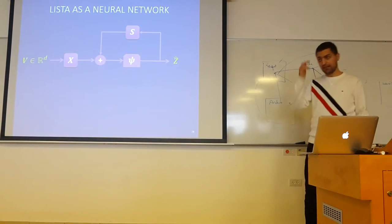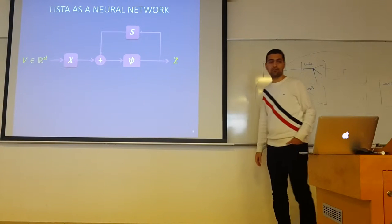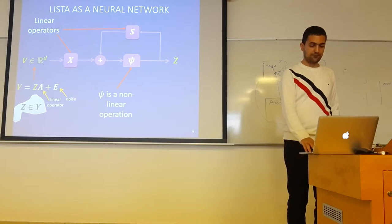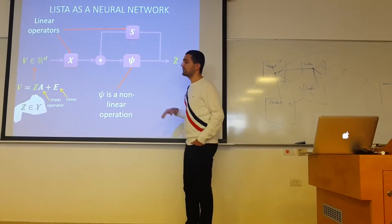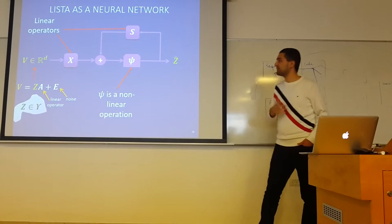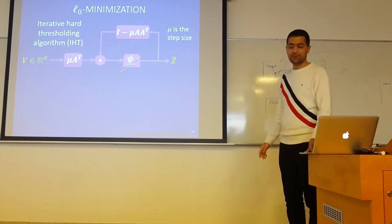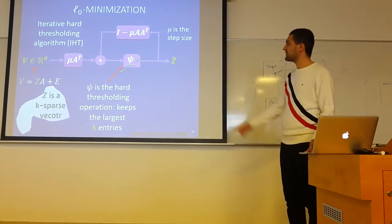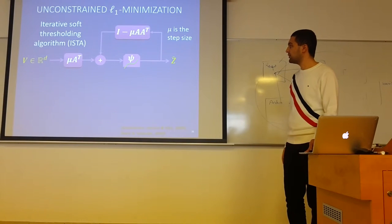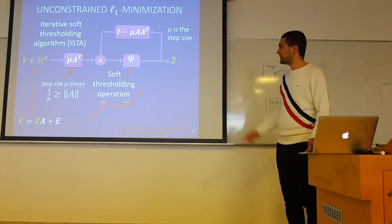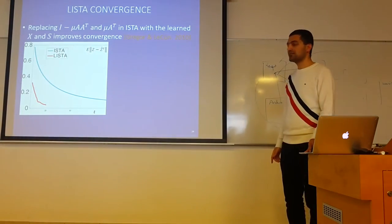The question is why it is possible to do that. If we write ISTA as a neural network — some kind of recurrent neural network — we have a linear part and a nonlinear part, which depends on the minimization or penalty function we are using. This structure has a very similar structure to iterative hard thresholding, where the nonlinearity is hard thresholding; for L1 minimization, the nonlinearity is projection onto the L1 ball; for LASSO, the nonlinearity is soft thresholding.